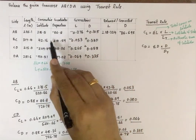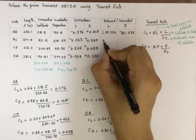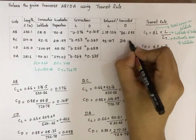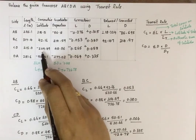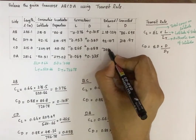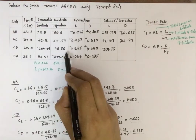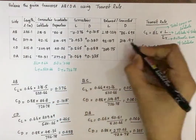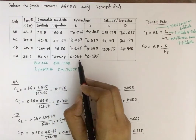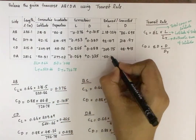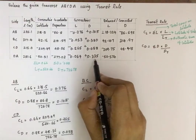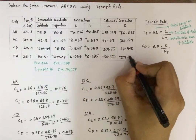For BC: 42.16 minus 0.053 gives 42.107; departure 314.59 plus 0.380 gives 314.97. For CD: −209.49 minus 0.265 gives −209.755; departure 48.36 plus 0.058 gives 48.418. For DA: −50.51 minus 0.064 gives −50.574; departure −277.03 plus 0.335 gives −276.695.